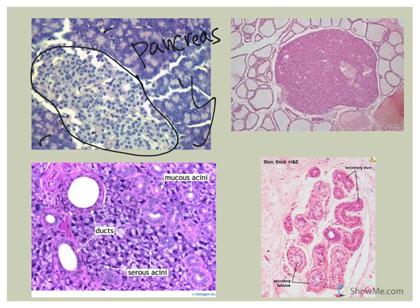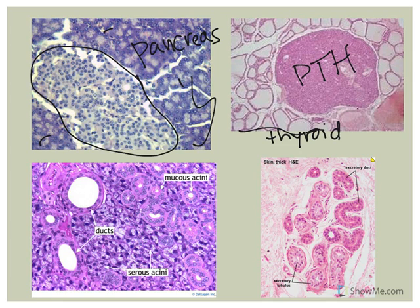Here are the thyroid and parathyroid glands, both of which are endocrine glands. The thyroid gland produces hormones like T3 and T4, while the parathyroid gland produces parathyroid hormone.